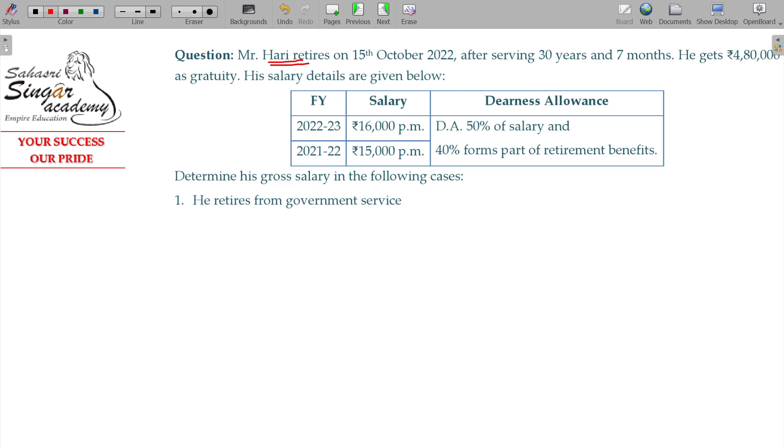Here, Mr. Hari retires on 15th October 2022, after serving 30 years and 7 months. He gets 4,80,000 as Gratuity, his salary details are given below.